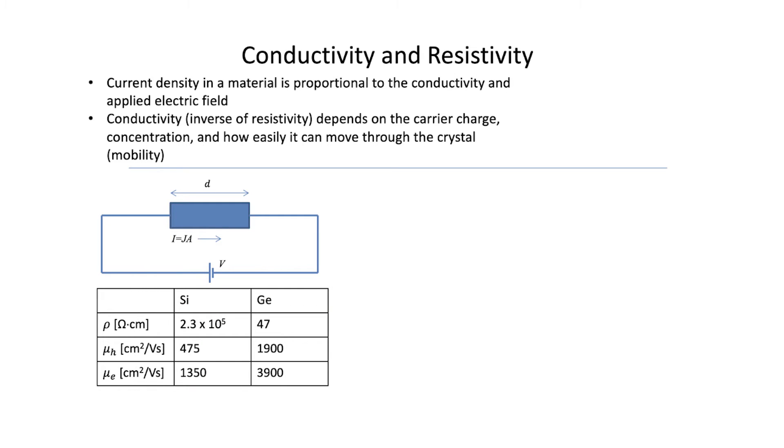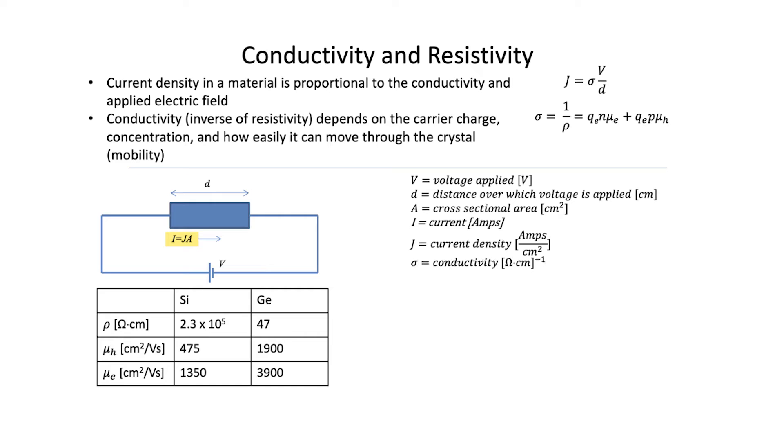Let's now imagine applying a voltage to a solid block of silicon or germanium. Imagine a situation where you have a battery with voltage V attached to a block of material with a length D and surface area A. A current I will flow through the material. Current is measured in amperes, and current density J is measured in amperes per unit area. How much current actually flows, of course, depends on the conductivity, sigma, of the material and the applied voltage.